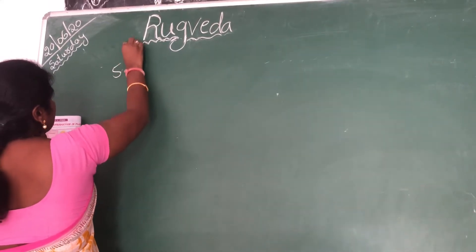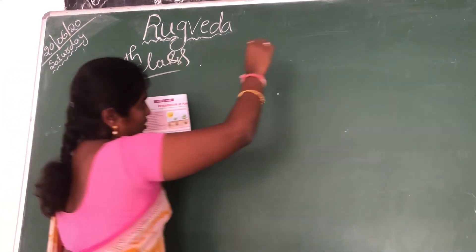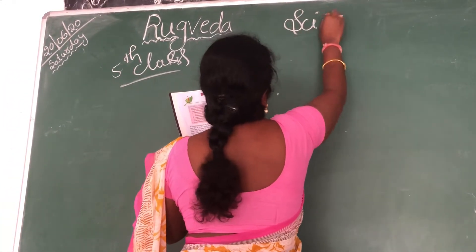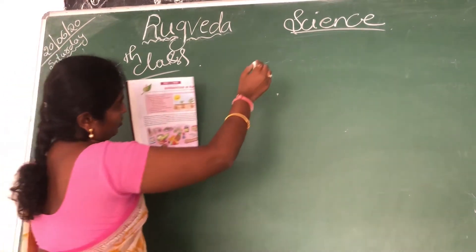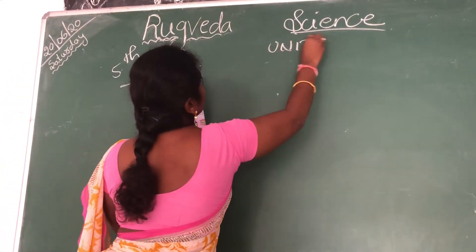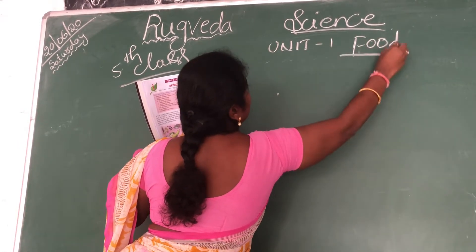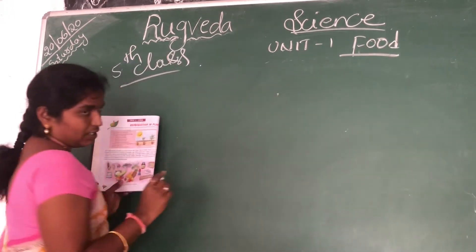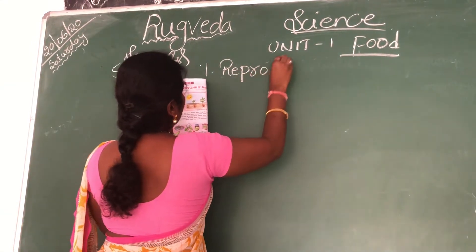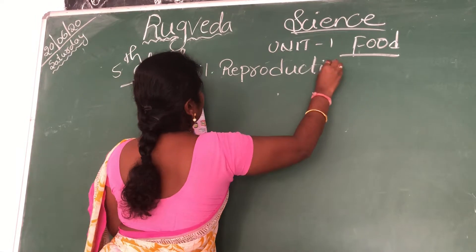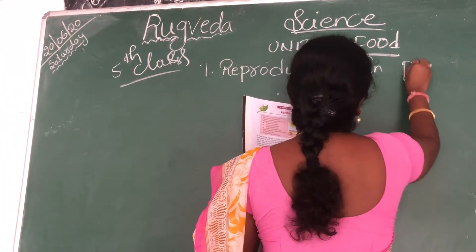Today, our class 5th science subject — the first unit is Unit 1, about food. In this first unit, the first lesson is reproduction in plants.